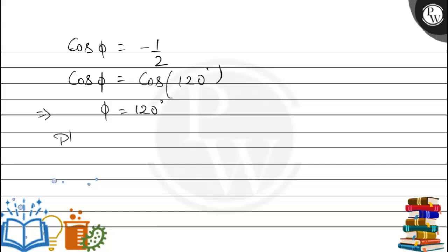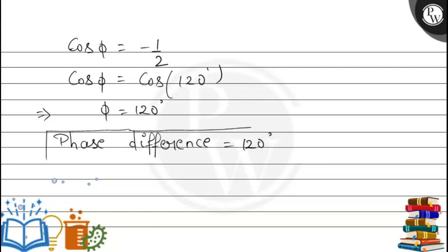So the phase difference between both the waves is equal to 120°. This is our final answer. I hope you understand this question.